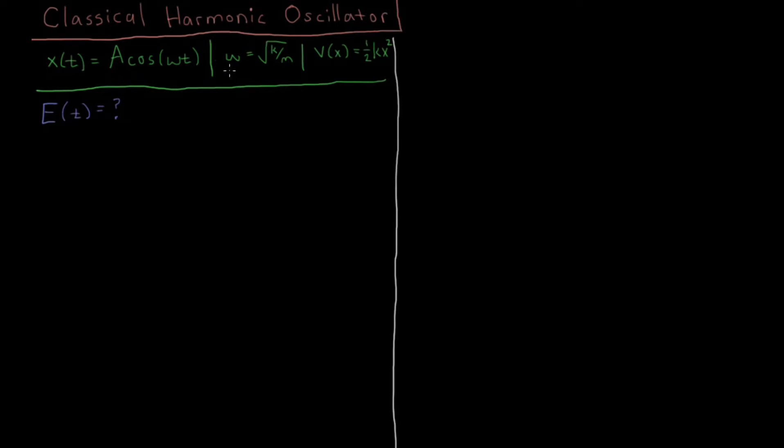And this omega constant equals the square root of k over m, where m is mass and k is some constant which appears in the potential energy, and the potential energy V(x) = (1/2)kx².